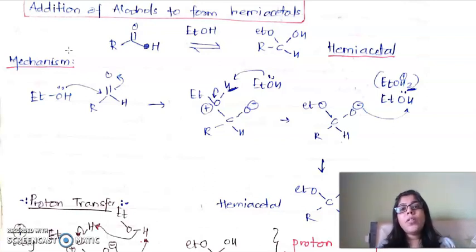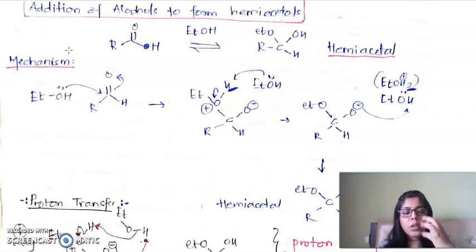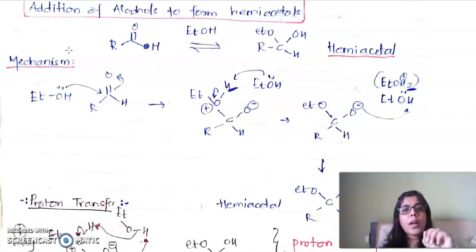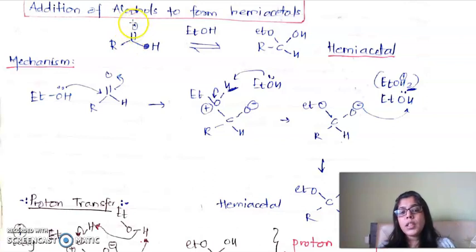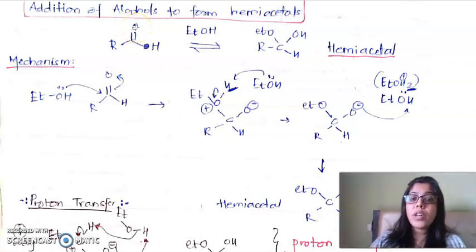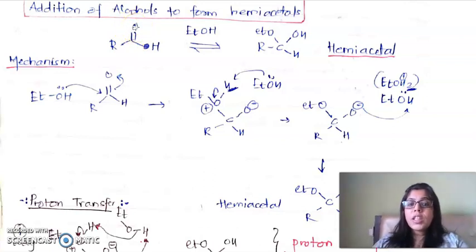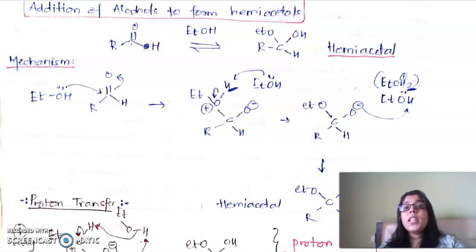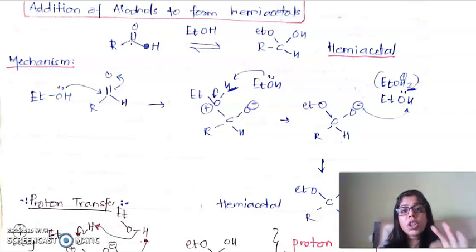The chapter name is nucleophilic addition to carbonyl group. Our substrate is always a carbonyl group, which is either an aldehyde or a ketone. A carbonyl carbon is always electron deficient because it is attached to an oxygen which is electron rich — oxygen pulls electrons toward itself, making the carbon electron deficient and hence vulnerable to attack by an electron-rich species.